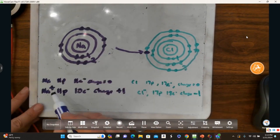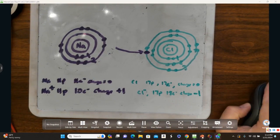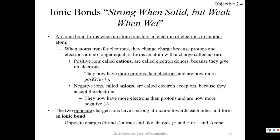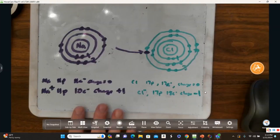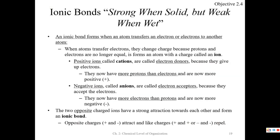It became a positive ion called a cation, and a negative ion called an anion. Positive ions called cations are electron donors — they give up electrons and become more positive because they have more protons than electrons. Negative ions called anions are electron acceptors — they accepted the electrons and now have more electrons than protons, making them more negative.